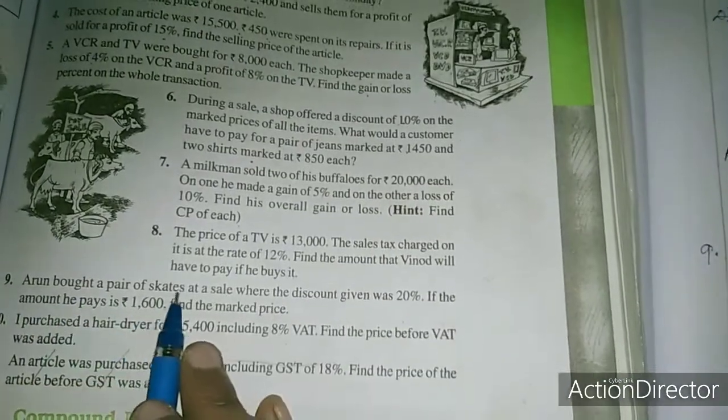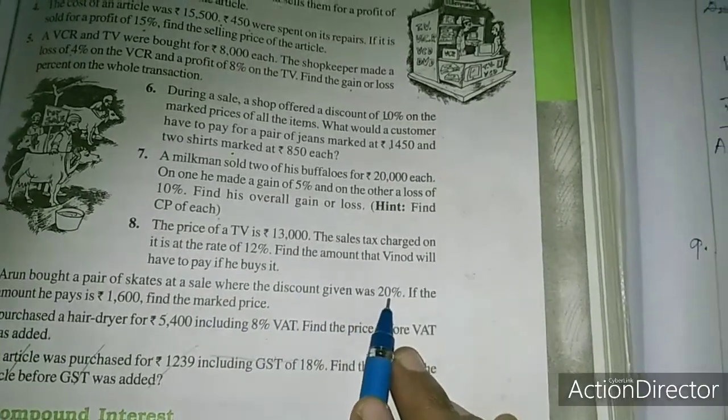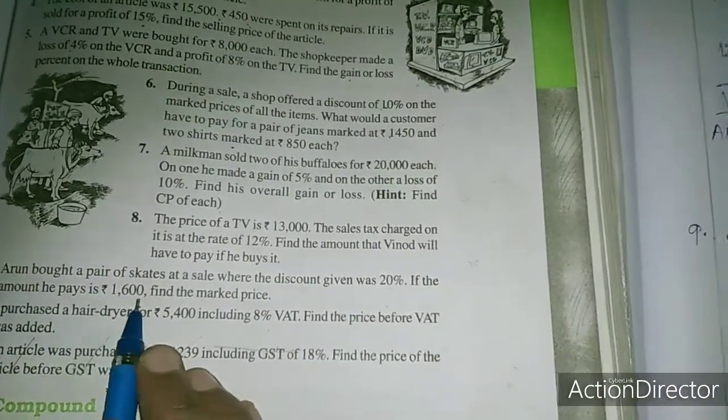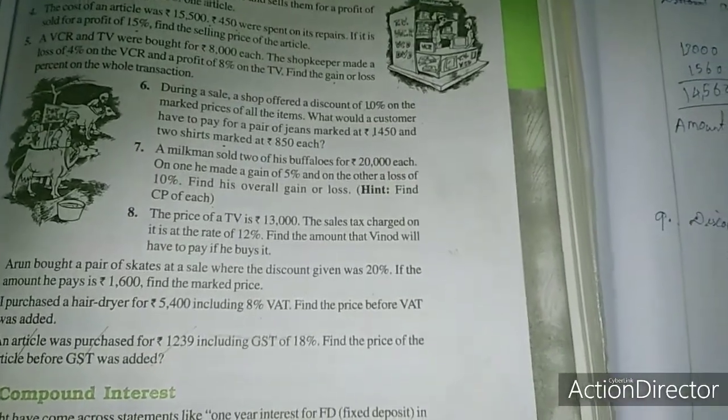Now we will move to problem 9. See here, Arun bought a pair of skates at a sale where the discount given was 20%. If the amount he pays is 1,600, find the marked price.